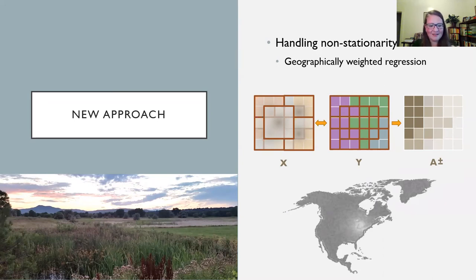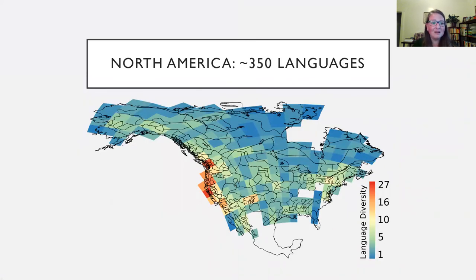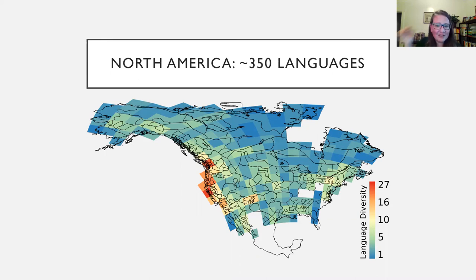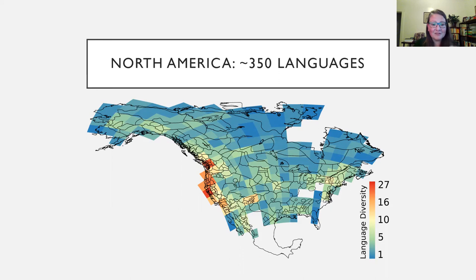We combined path modeling with geographically weighted regression, with Elisa Barreto instrumental in making this method work. We tested how well predictors that have been proposed in controversial works on drivers of linguistic diversity account for the linguistic diversity we actually find in North America. We used the Smithsonian Handbook of North American Indians map supplemented by California Language Archive map data, looking at 350 languages of North America. For isolation we used topographic complexity and river density. For resources we used ecoregion richness. For climate we used precipitation constancy and temperature constancy, plus climate change velocity since the last glacial maximum.